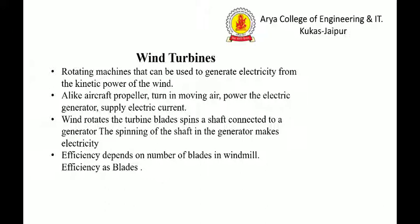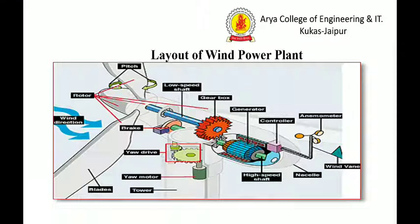A wind turbine is a rotating machine that can be used to generate electricity from the kinetic energy of the wind. Like an aircraft propeller, the fans turn in moving air to power the electric generator and supply electric current. Wind rotates the turbine blades; a shaft connected to a generator spins, making electricity. The efficiency depends on the number of blades in the windmill.